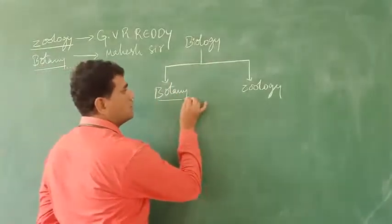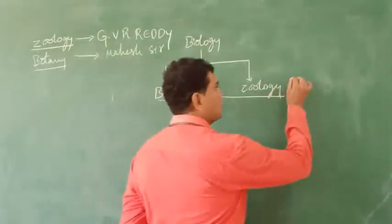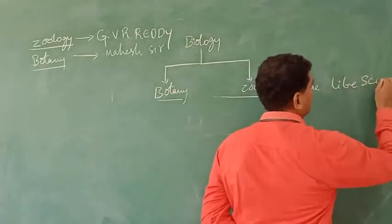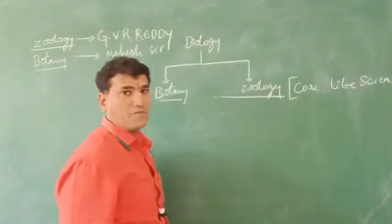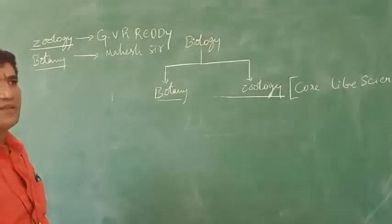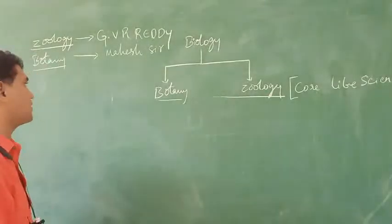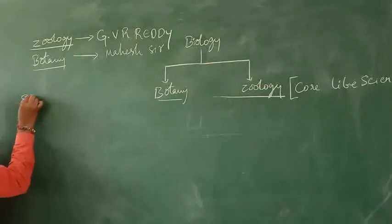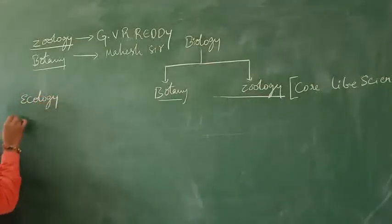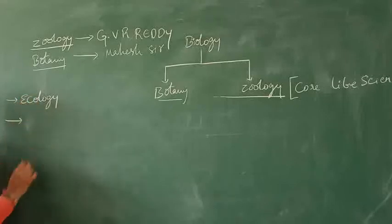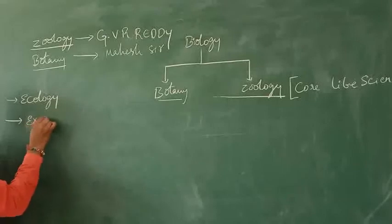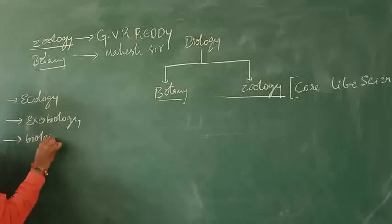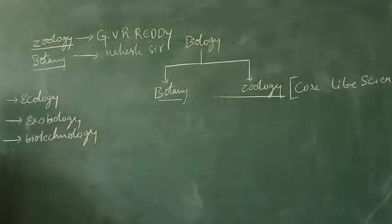These are the important core-like sciences, these are called core. Apart from this, there is the interaction between living organisms and non-living organisms. Other parts which are connected with biology are ecology, exobiology, biotechnology.